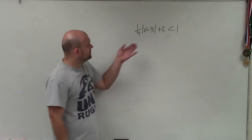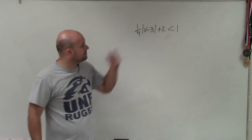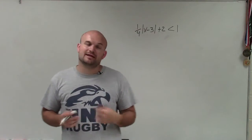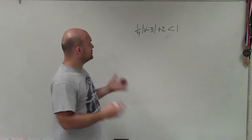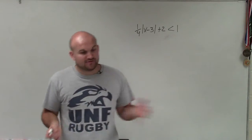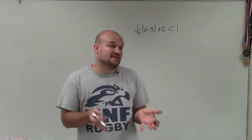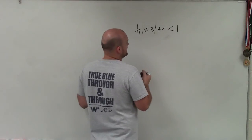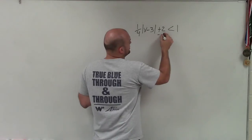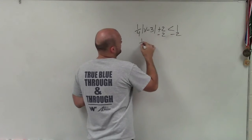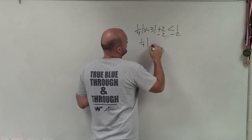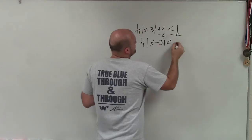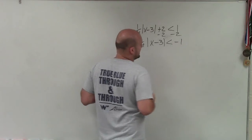Welcome, ladies and gentlemen. What I'd like to do is show you how to solve this absolute value inequality. When solving an absolute value inequality, the first thing we need to do is isolate the absolute value before we can create our two cases. To do that, I'll subtract 2 on both sides. So I have 1/4 absolute value of x minus 3 is now less than negative 1.